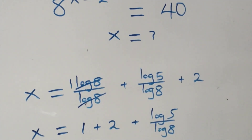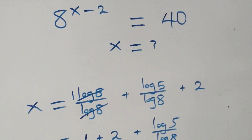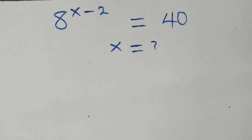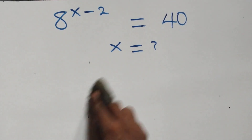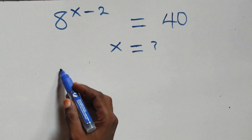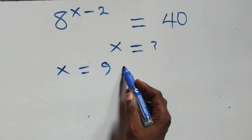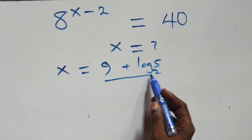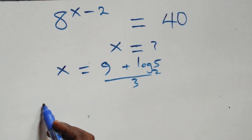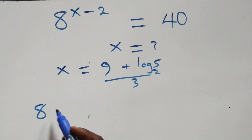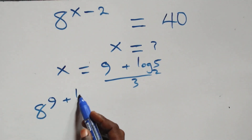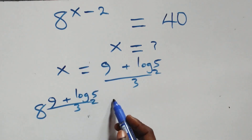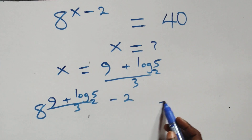Let's check if this satisfies the given problem. We substitute the value x equals 9 plus log₂5 all over 3 back into the equation. This gives us 8 raised to the power of (9 plus log₂5 all over 3) minus 2, and we check if it equals 40.